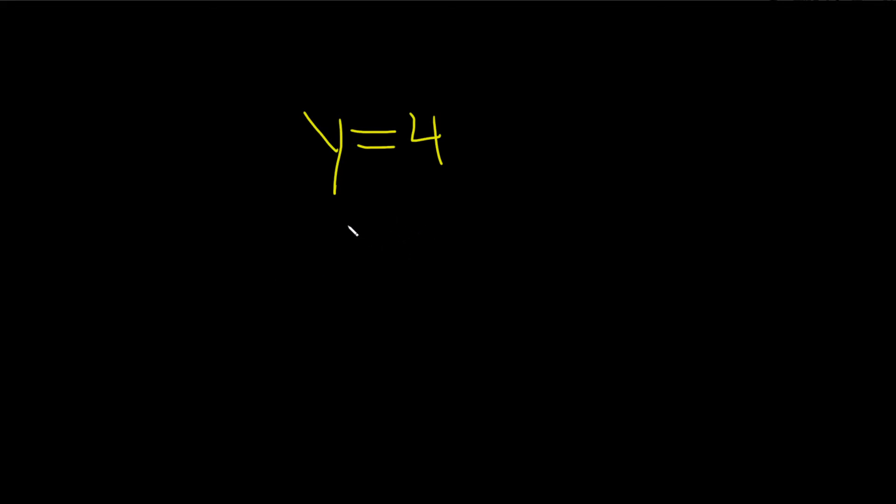So the trick is, whenever you have y equal to a number - whether it's y equals 4, y equals 2, or y equals any number - you always have a horizontal line.